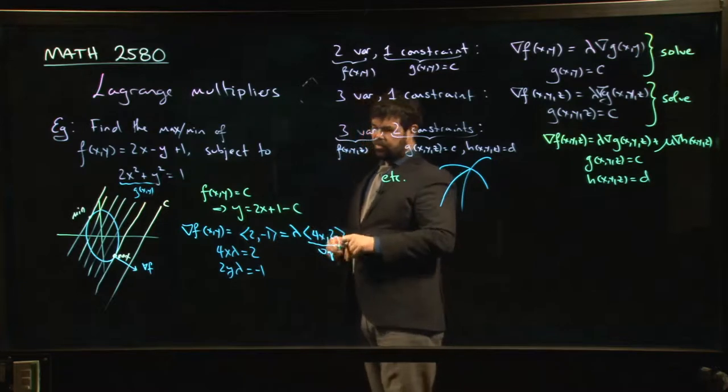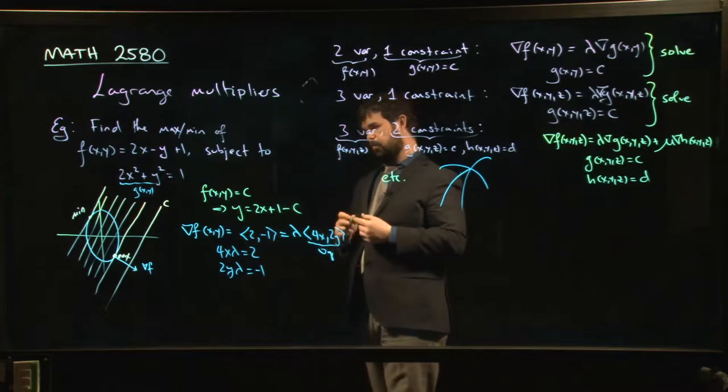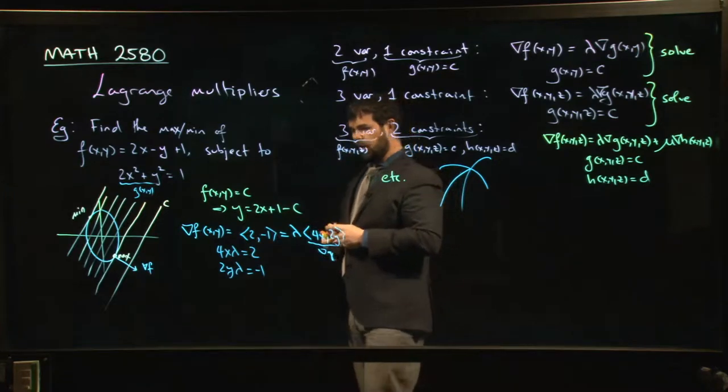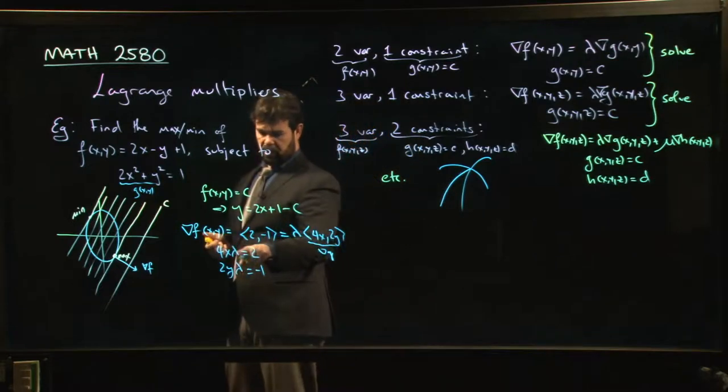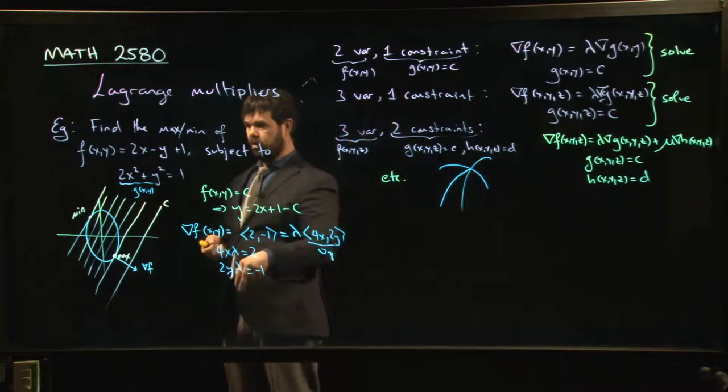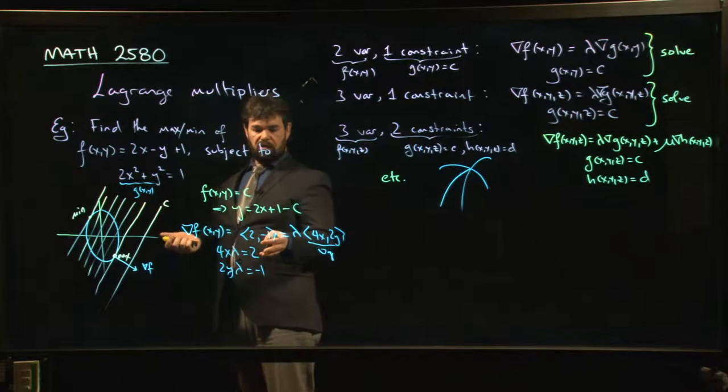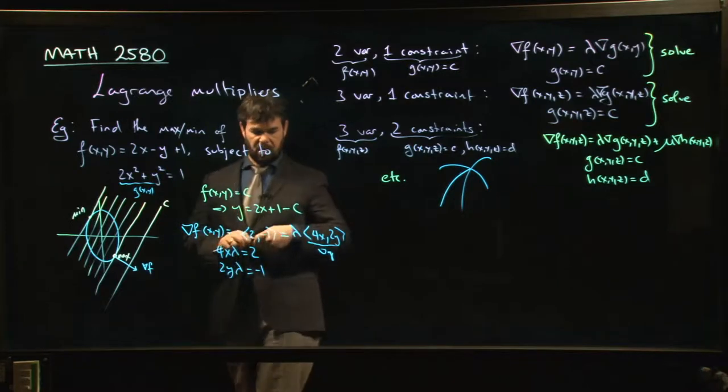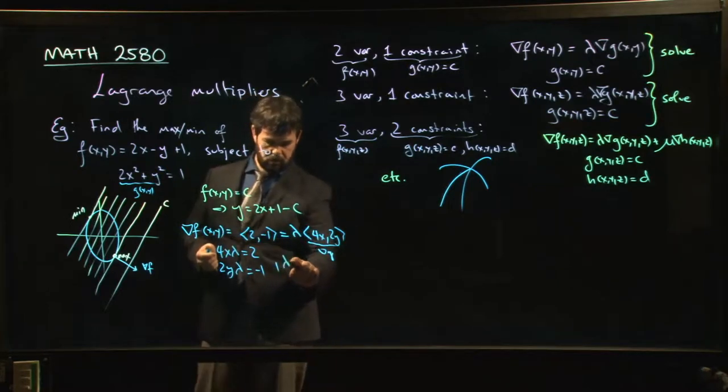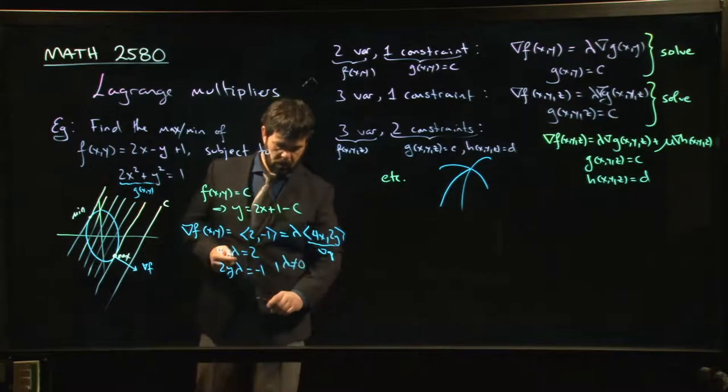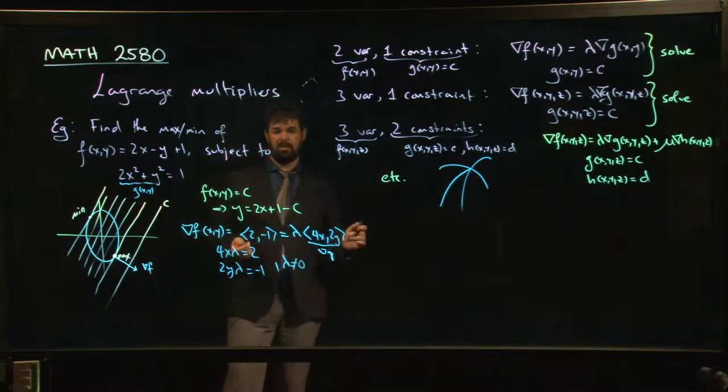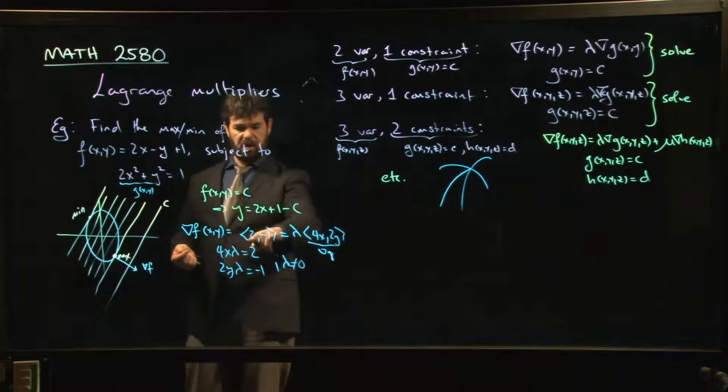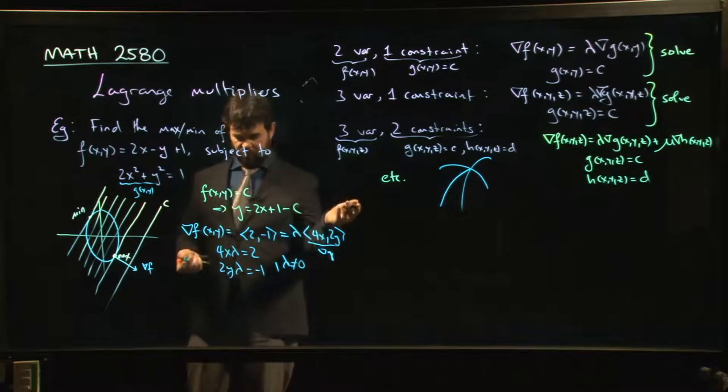So there are some different things you could do. You could play around with maybe you say, okay, what if lambda is 0? Well, if lambda is equal to 0, well, that can't actually happen. I know that lambda can't be 0. Why can't it be 0? It can't be 0 because then I'd have this vector, which is clearly not 0, equal to the 0 vector. So lambda is not 0.